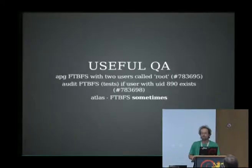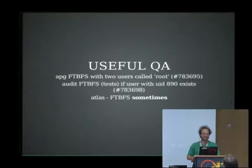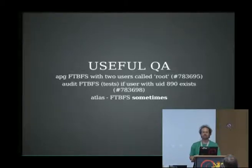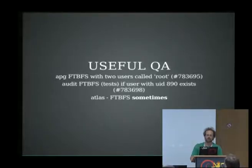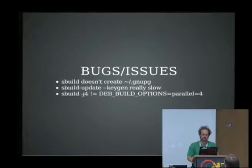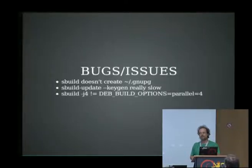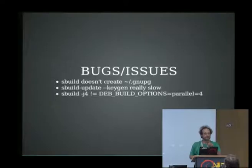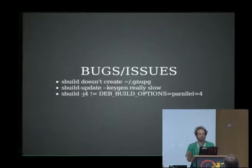We got a couple of interesting bugs. If you have two users called root, there's one package that won't build. It turns out all the ARM machines in the cluster have UID 0 and 1 both being root, which is apparently perfectly legal and should work. And audit tests use UID 890 and expect it not to be a user — but we've got quite a lot of users, so that's just wrong. Some things just fail sometimes — those are clearly bugs, and you don't find them unless you keep rebuilding. We also discovered that -j4 is not the same as buildopts equals four, because it parallelizes the Debian makefile as well. Quite a lot of Debian makefiles are not parallelizable and there's a way of declaring it, but they don't. The keygen thing in sbuild is really annoying — you don't want to run it on your server because it takes like half an hour to get enough entropy, so you generate those once and then copy them in.